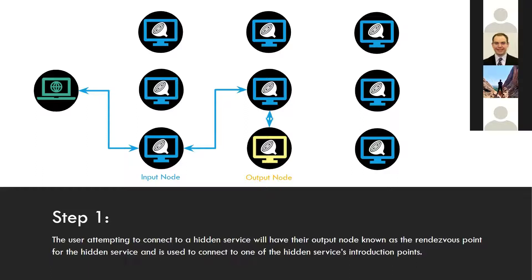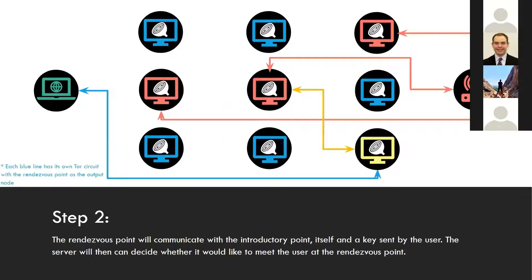The rendezvous point communicates with the hidden service over an introductory point. At this stage, the server decides whether or not it would like to meet with the user.